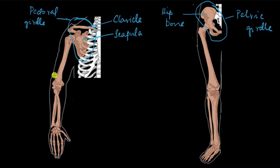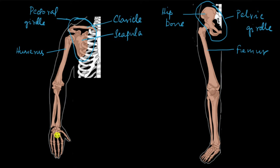The bone of the upper arm is called the humerus. Similarly, our leg has the femur, which is the thigh bone. In the forearm, we have two bones: the radius and the ulna. The radius bone is always on the side where the thumb is, whereas the ulna is on the opposite side.